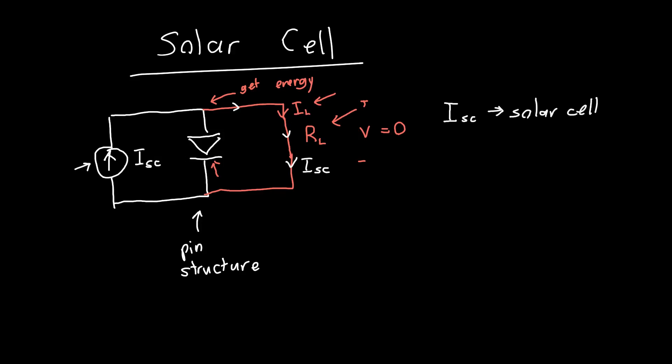In general, we don't have direct access to what the photocurrent is. We can apply different amounts of light to the solar cell — for example, by putting it under some shade as we're irradiating it. But in general, the short circuit current is a characteristic of the solar cell that we can measure when it's out in the sun.